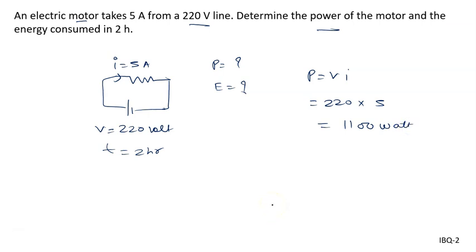What is the energy consumed? We know energy, E, can be written as H also. There are number of formulas: I²RT, VIT, V² upon R into T. So any formula you can apply.